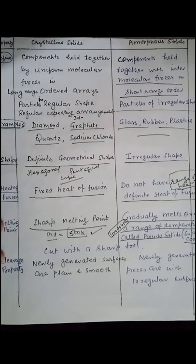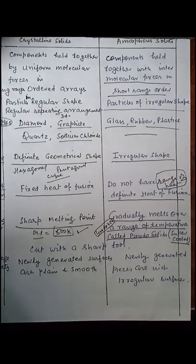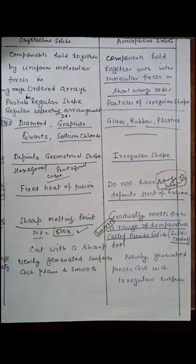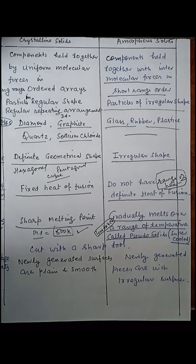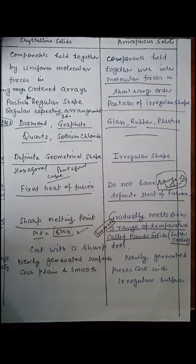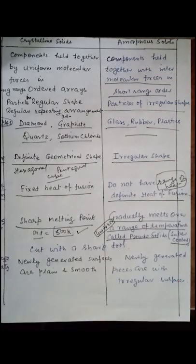Amorphous solids are also called pseudo solids because they have a tendency to flow, though it is very slow. As temperature rises they have more tendency to flow, so they are called pseudo solids or super cooled liquids. Super cooled liquids means if a liquid is cooled below the melting point, it will be converted into an amorphous solid.